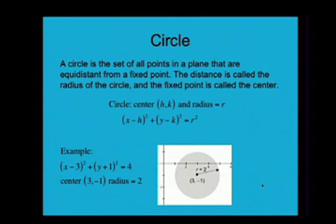So the example we have is (x - 3)² + (y + 1)² = 4. So the center of the circle is (3, -1) and the radius is equal to two. And that's the circle that you can see drawn right there in front of you.